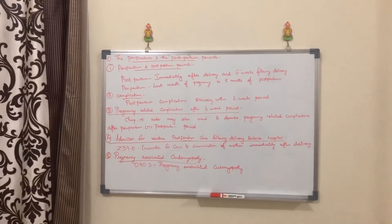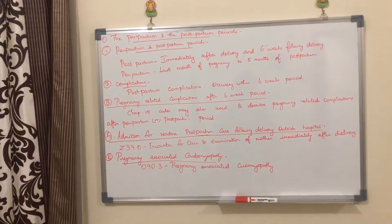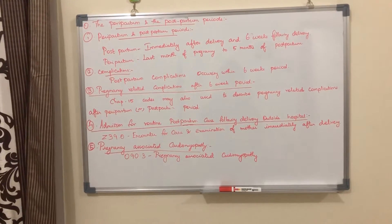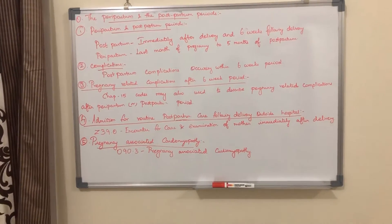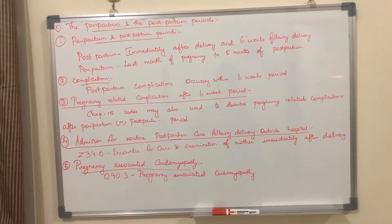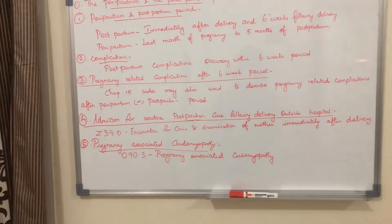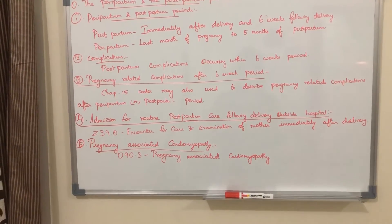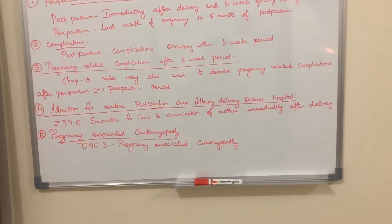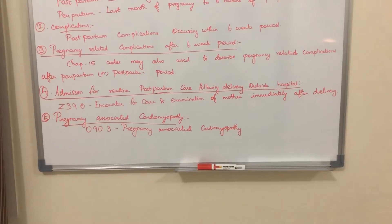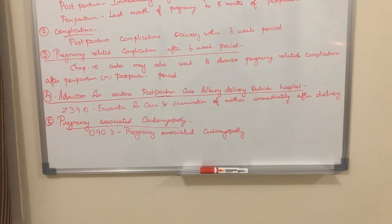The next topic is the peripartum and postpartum period. The postpartum period is immediately after delivery and up to 6 weeks following delivery. The peripartum period is from the last month of pregnancy to 5 months postpartum. Complications developing within 6 weeks are coded as postpartum complications. For pregnancy-related complications after 6 weeks, chapter 15 codes can still be used. If delivery occurs outside the hospital and the mother is admitted only for postpartum care, assign Z39.0 — encounter for care and examination of mother immediately after delivery.